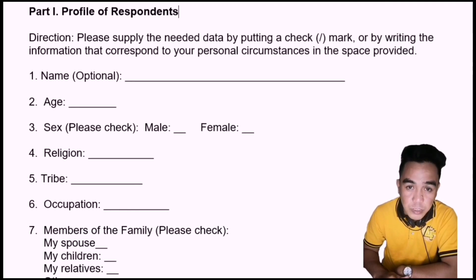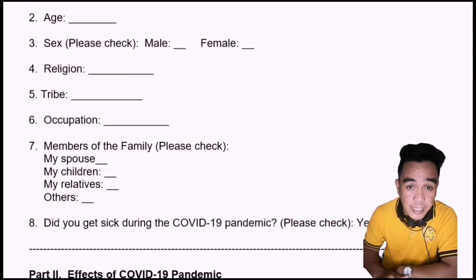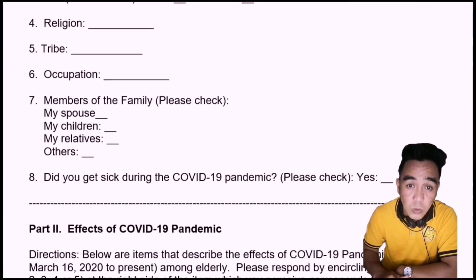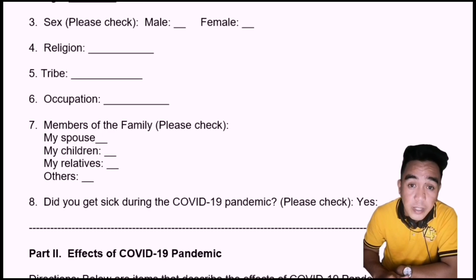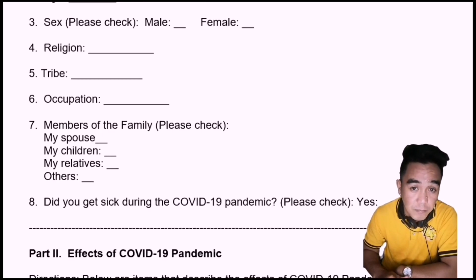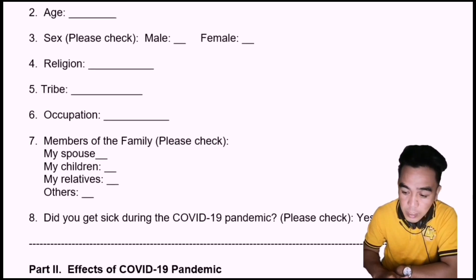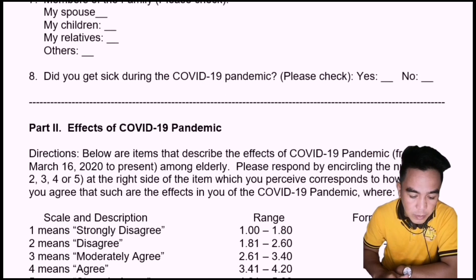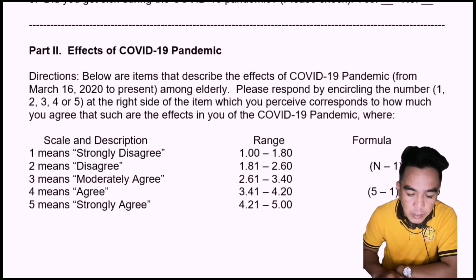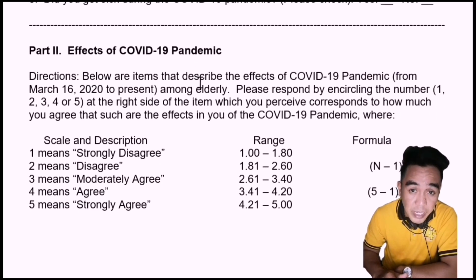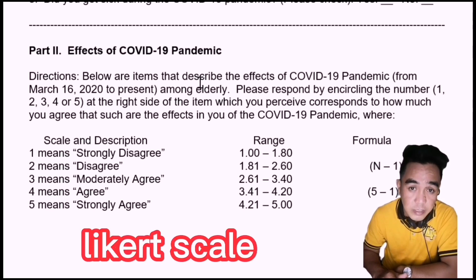Now let's proceed with Part 2, which is the itemized questions where the researchers sought it as a gap, phenomenon, or problem for the respondents. In making Part 2, make sure that you are going to use the Likert scale.